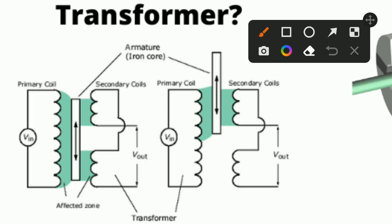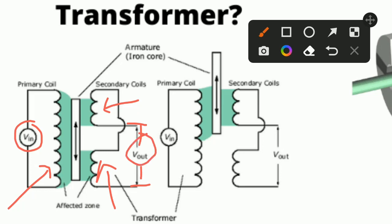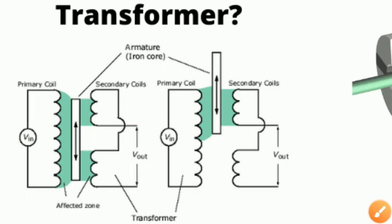We are using secondary coils: this is secondary coil one and this is secondary coil two, and in between them we take the output voltage V-output. This is the construction of LVDT. In between these coils, one armature is placed. This part is called the armature, which is made up of an iron core. This iron core is movable — it moves within the coil assembly.